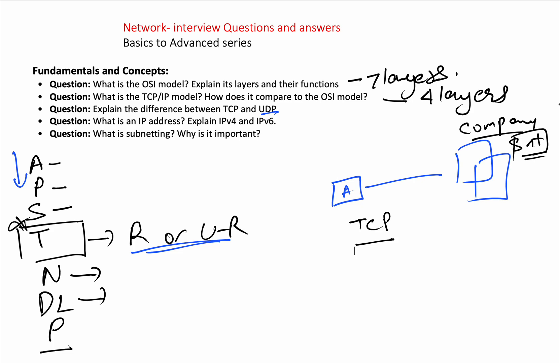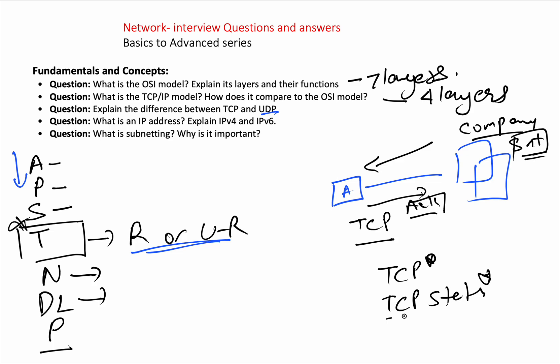In UDP, if there's any error, you don't care. In TCP, for every packet, you send an acknowledgement so the server knows — it's very reliable and works through states. You can check the TCP handshake process and TCP states in a dedicated video. The key difference: UDP is unreliable but faster, no acknowledgements; TCP is reliable, has acknowledgements and retransmissions.